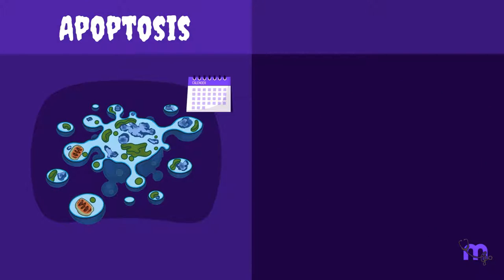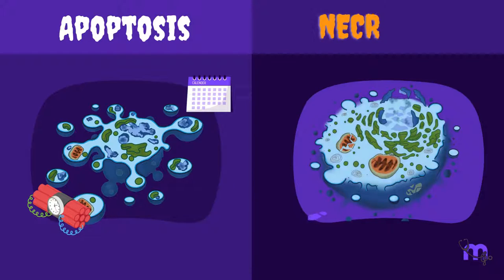Apoptosis is a planned and programmed type of cell death, likened to a suicide or assassination. Necrosis is uncontrolled cell death, more like a messy murder.